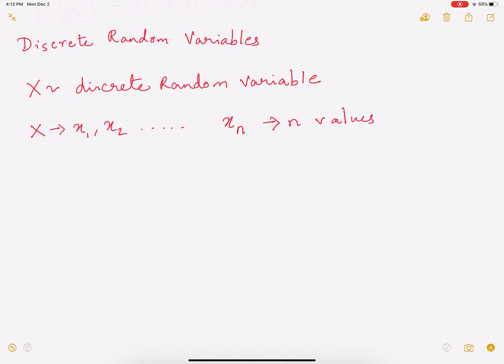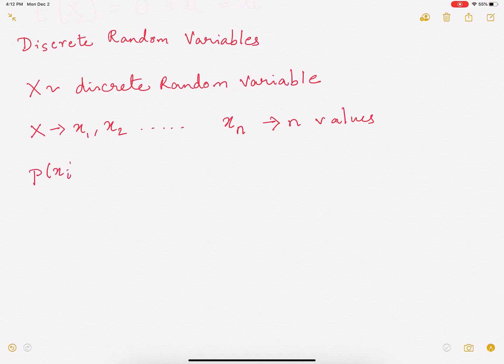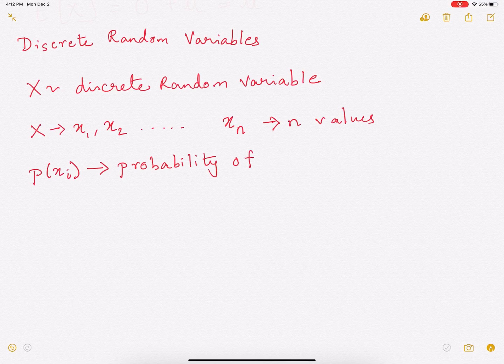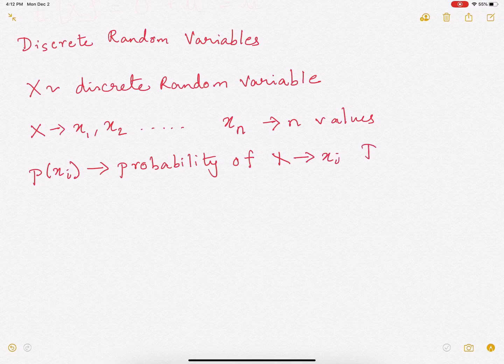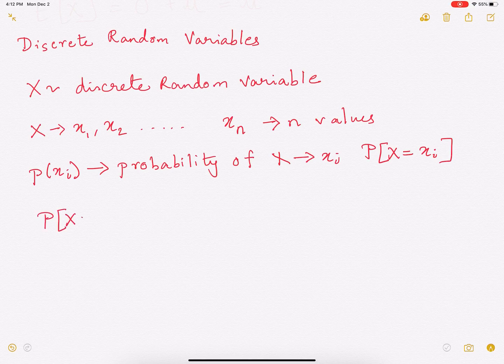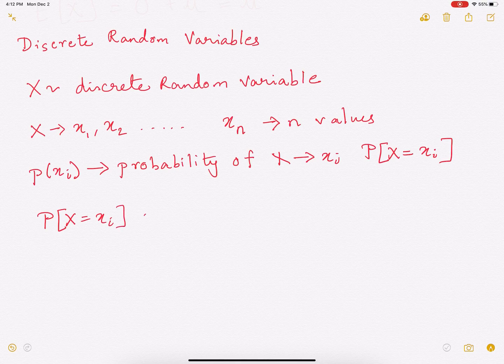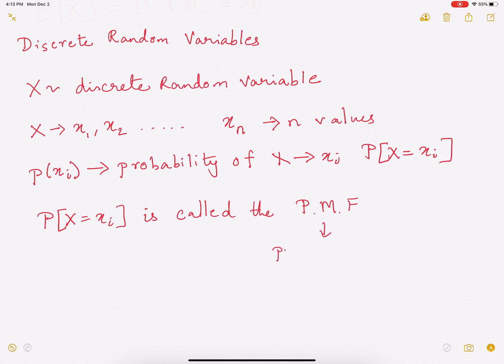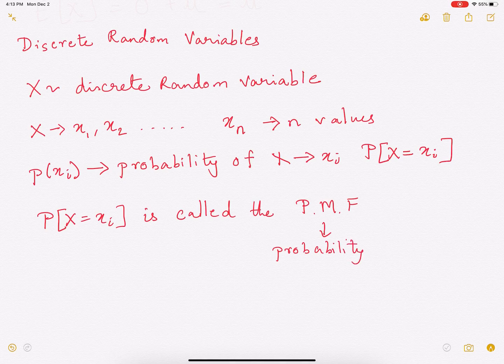Now the probability of x taking value xi is given by P of xi. This is probability of x taking the value xi or P of capital X equal to xi. Now this P of capital X equal to xi is called the PMF, that is the probability mass function.